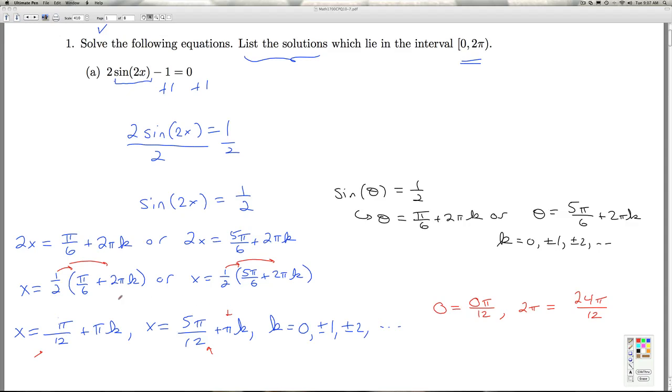And since I'm adding multiples of π, remember π is 12π/12. So this is just going to help us as we go through to determine which ones lie between 0 and 2π.